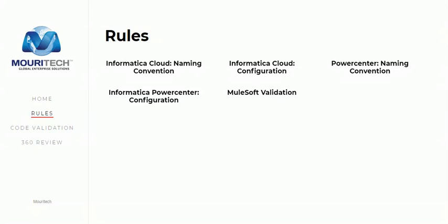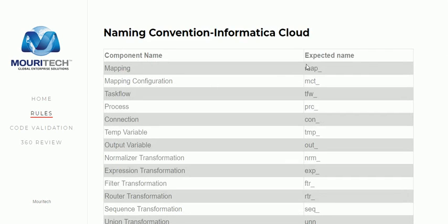Now let's move to the demo of the tool. In the code review tool you can see Rules — it has Informatica Cloud naming conventions, configuration-level settings, Power Center naming conventions, Informatica Power Center configuration, and Mulesoft validation. We need to predefine the rules on the basis of which code validation will work. When I click here, it says mapping should start with 'map underscore'. It depends on the organization — different companies may prefer different names, so we can change it, but we need to define the rules on which code validation will be done.